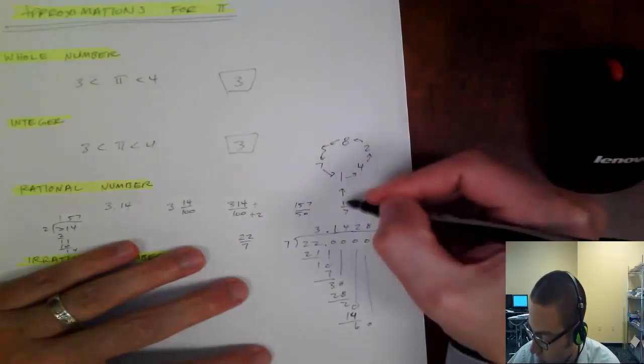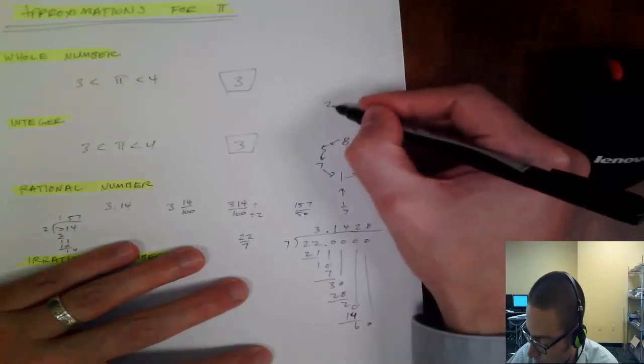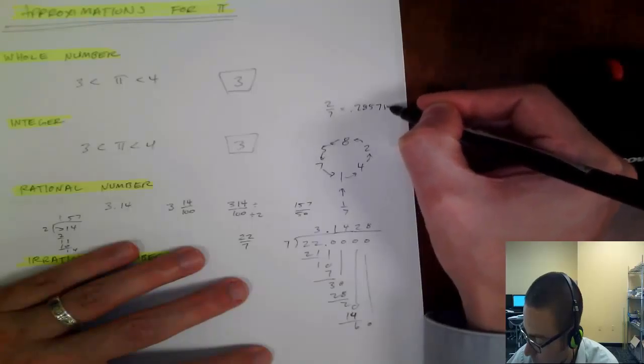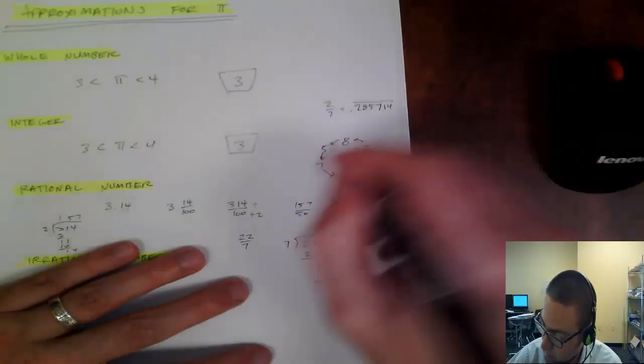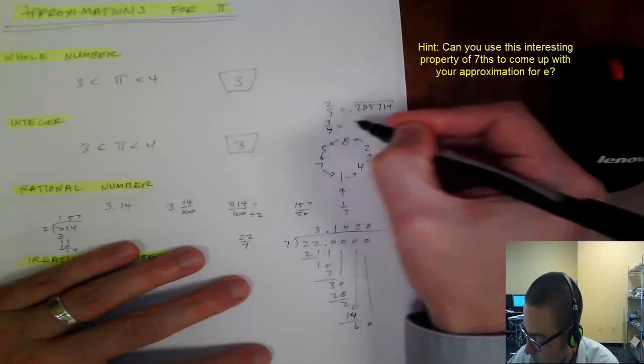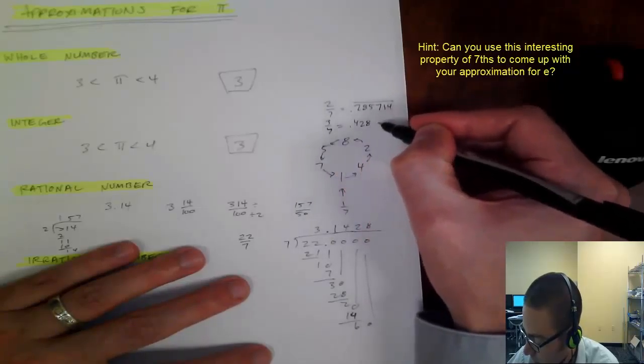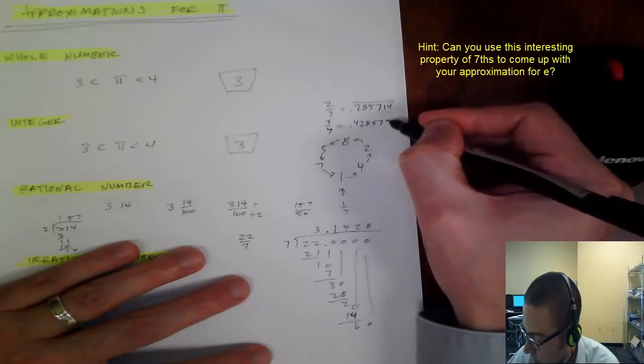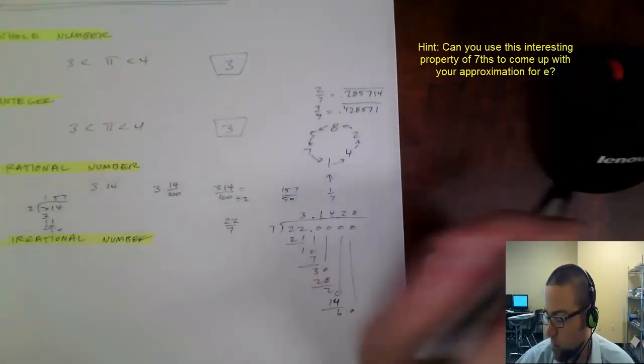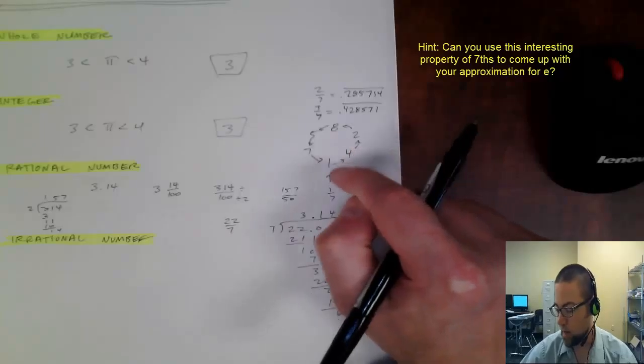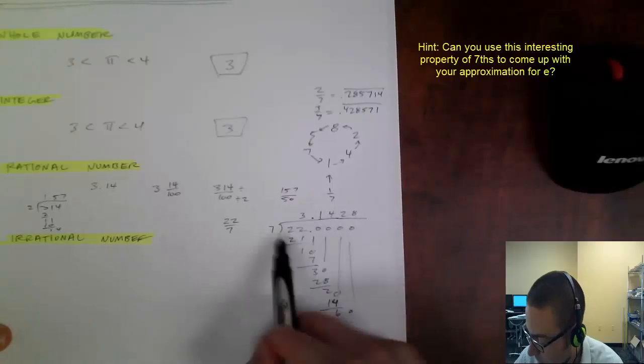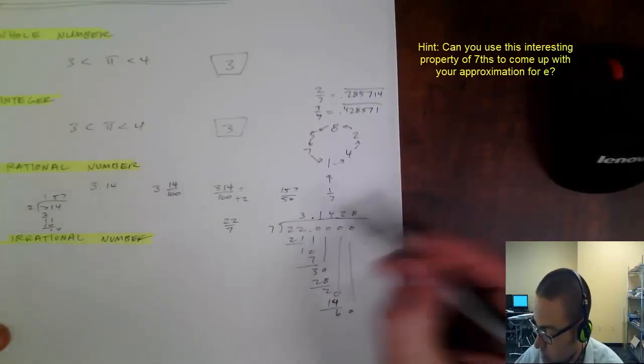If I wanted to do 2, 7ths, it starts at the second highest number, so 2, 7ths as a fraction would be .2857, 1, 4, and then it repeats. That's kind of the interesting quality of 7ths and how that 1, 4, 2, 8, 5, 7, 1, and then it repeats. But that's the approximation of pi as 22 7ths, so it would be 3.142857.